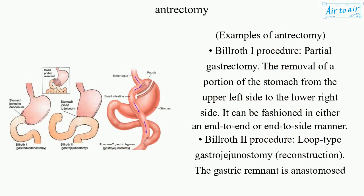Examples of antrectomy. Billroth I procedure: partial gastrectomy involving the removal of a portion of the stomach from the upper left side to the lower right side. It can be fashioned in either an end-to-end or end-to-side manner.